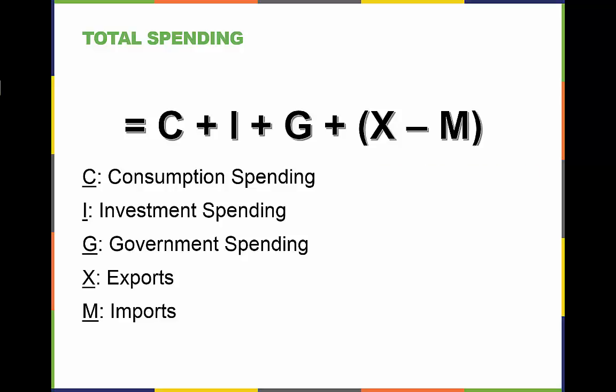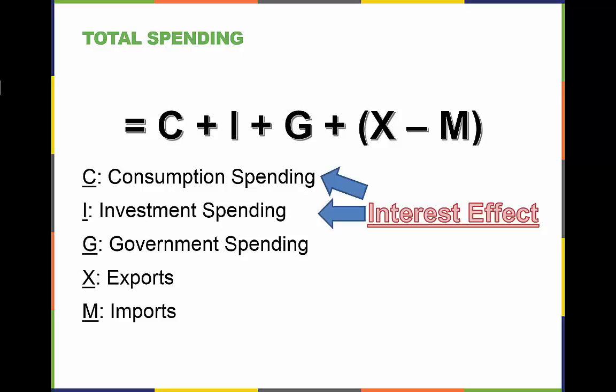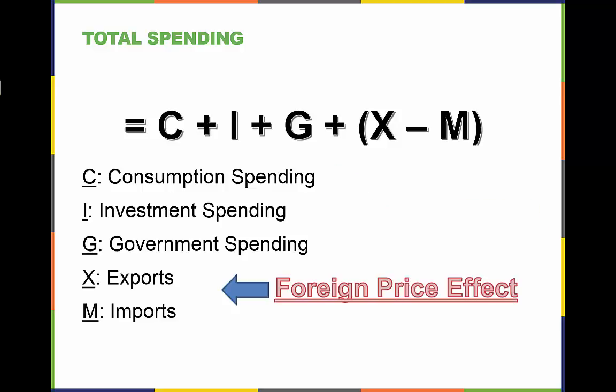Both consumers and firms will spend more or less depending on the price of borrowing or lending money. This is called the interest effect. Relative changes in currency values have an impact on imports and exports. This is called the foreign price effect.